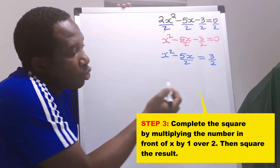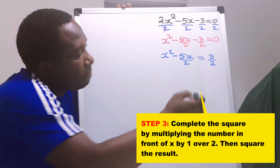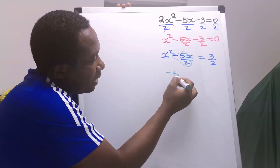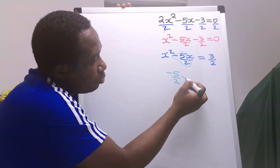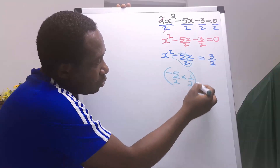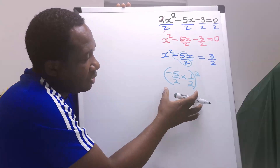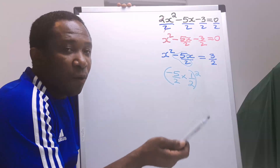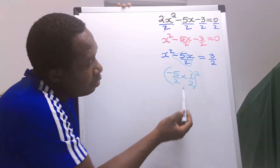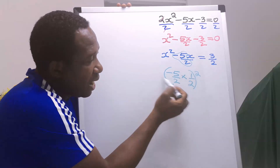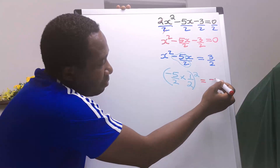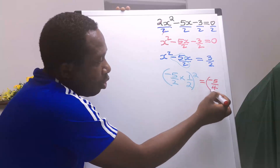Next, we are going to complete the square by taking the coefficient of x, which is minus 5 over 2. We are going to multiply this by 1 over 2, then square this. We complete the square when we take the coefficient of x, multiply it by 1 over 2, and square everything together. Now, you have minus 5 over 4, all squared.